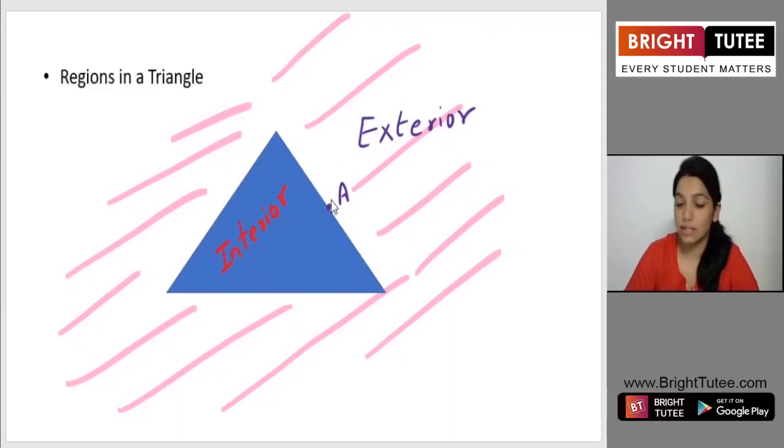And if I draw a point here, say point P, can you tell me in which region this point P is lying? It is lying in the interior region. Where is this point X lying? It is lying in the exterior region. And what about this point T? It is also in exterior region. So I hope the regions are clear with you and you also know what a triangle is and how do we name a triangle.